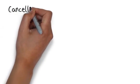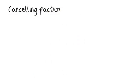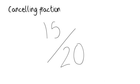Now let's move on to cancelling fractions down. Cancelling fractions down can be made simple if you just know the highest common factor between the numerator and the denominator.